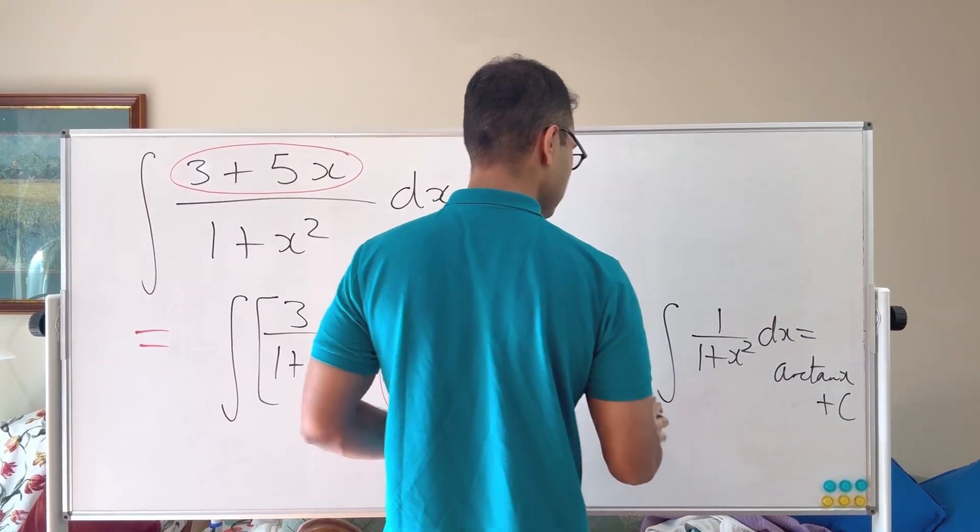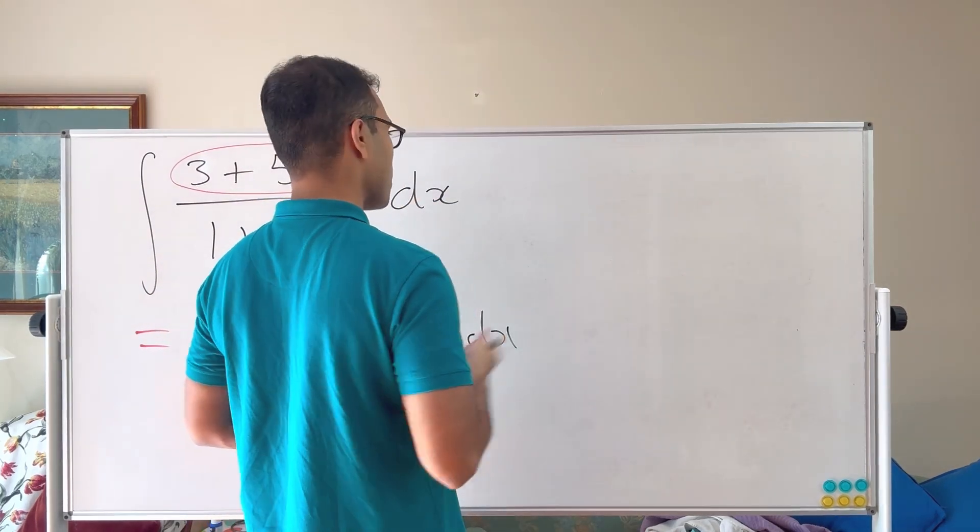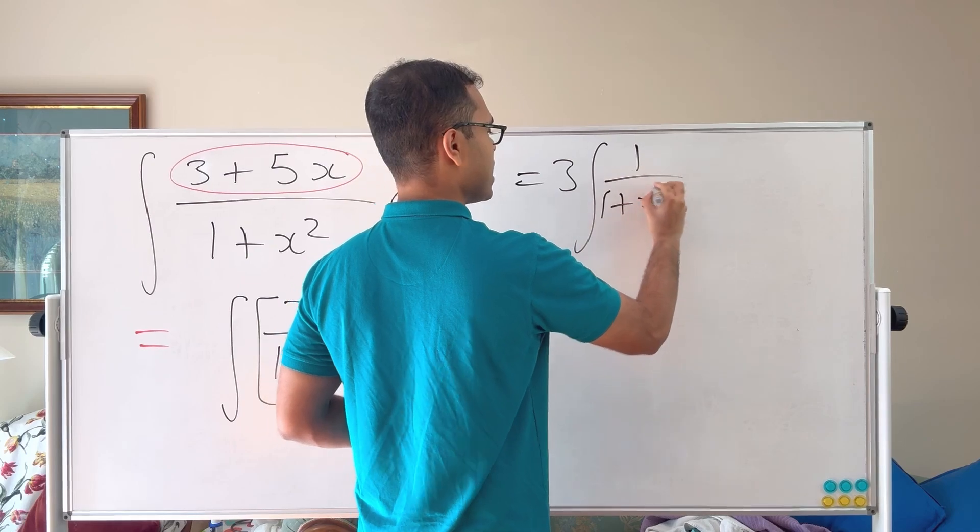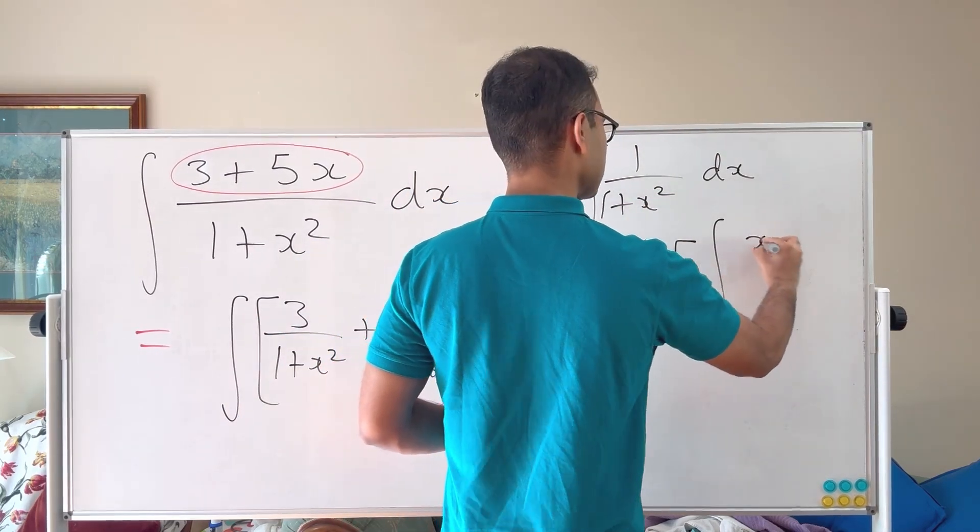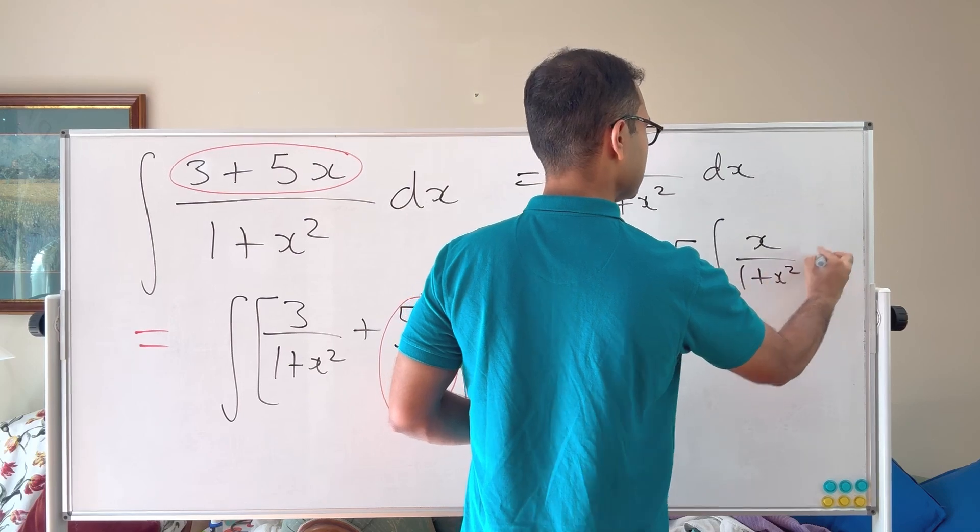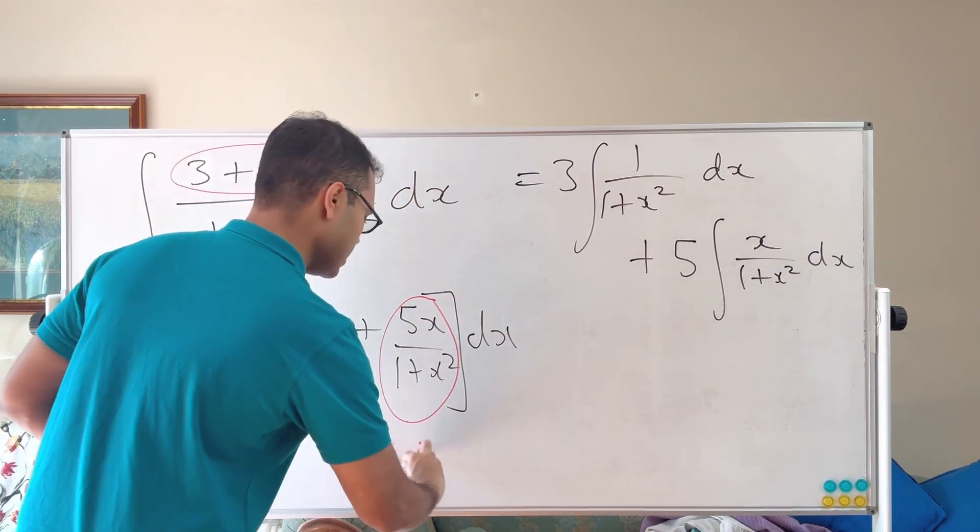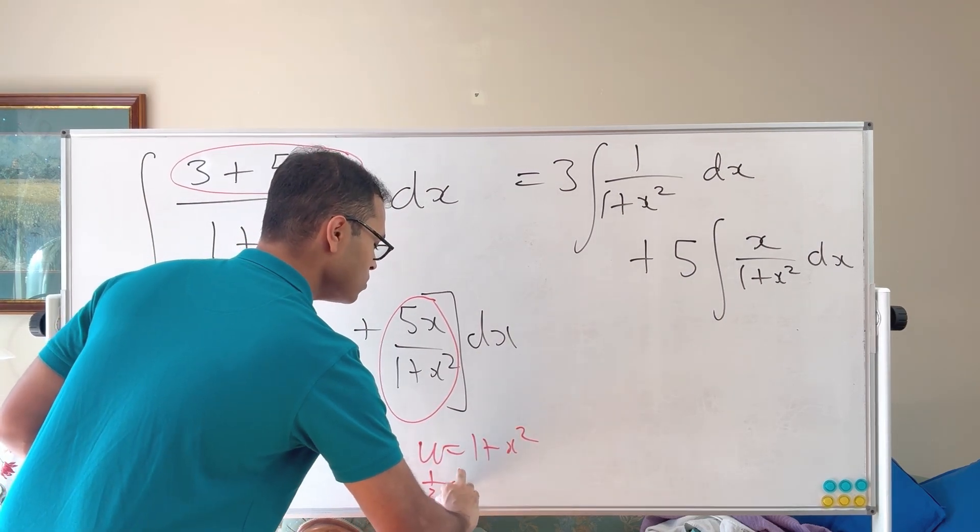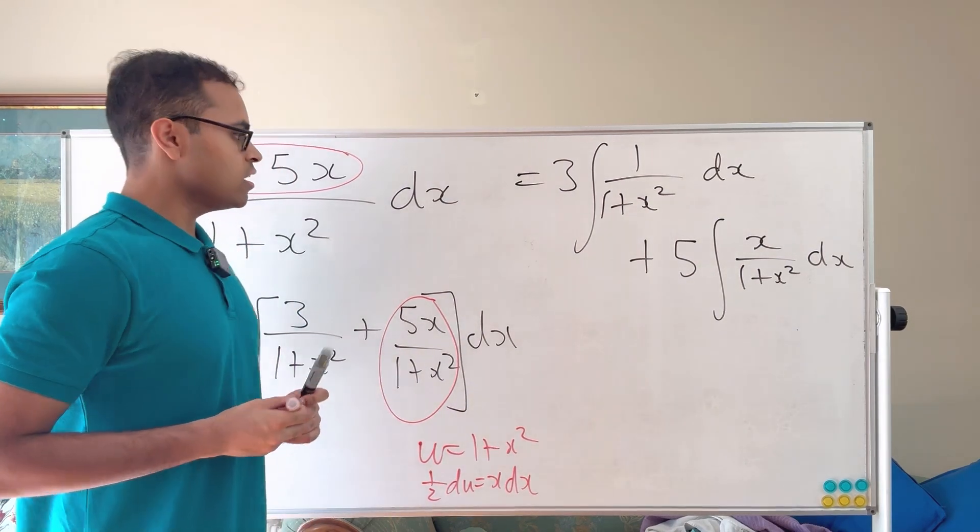But now that we have that, let's try to sort of simplify this problem. Let's solve it. So let's solve the problem. We're going to get 3 times the integral of 1 over 1 plus x squared dx plus 5 times the integral of x over 1 plus x squared dx. And now the key trick is that, remember what I said at the beginning, if u equals 1 plus x squared, then 1 half du is going to equal to x dx, because du is 2x dx.